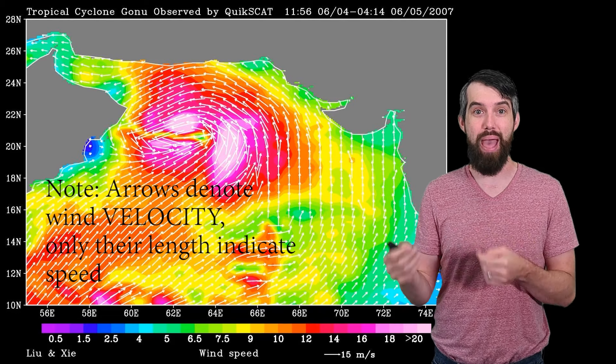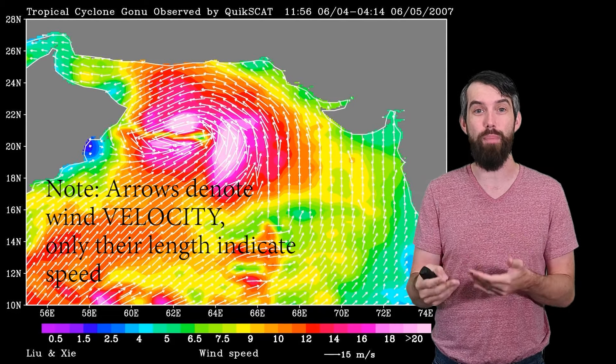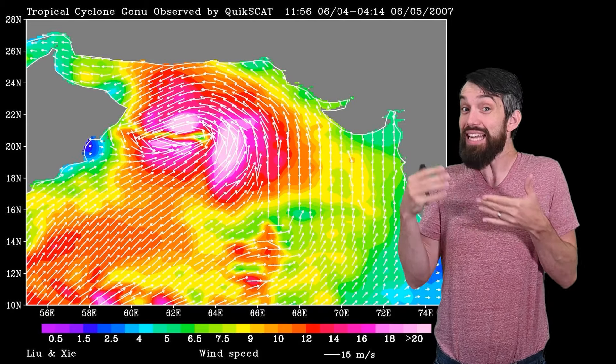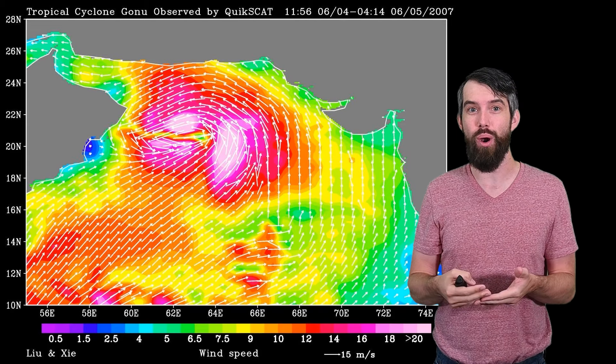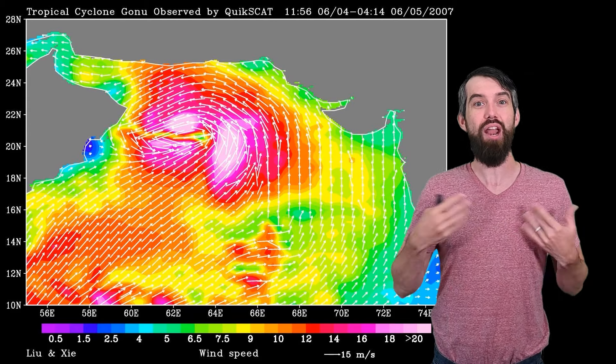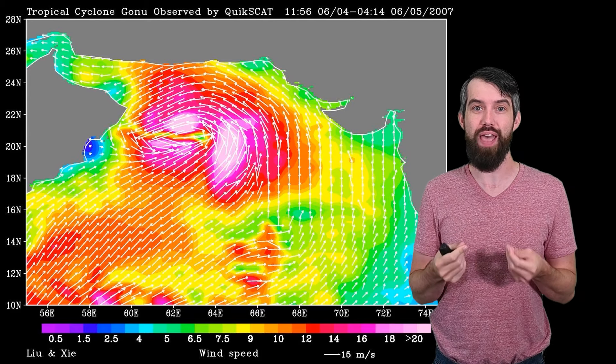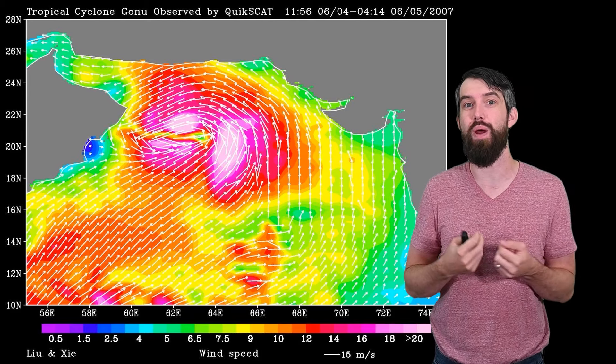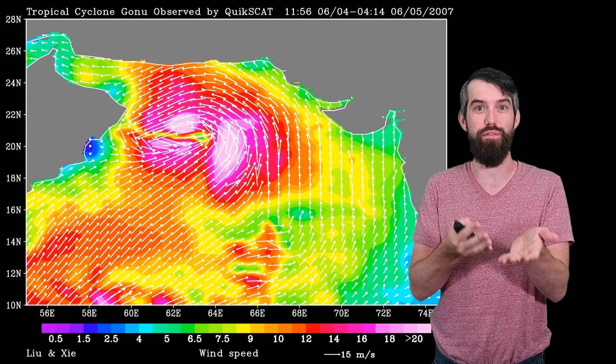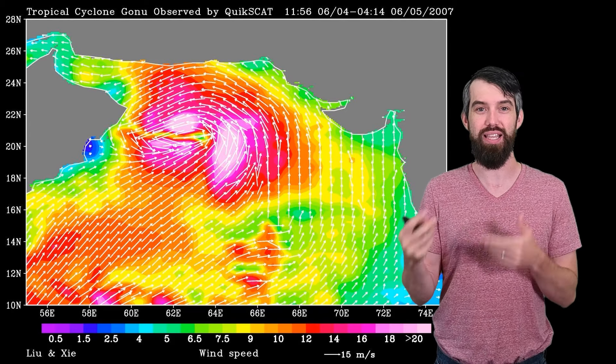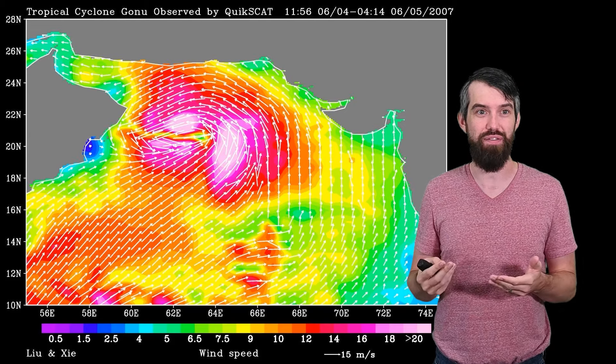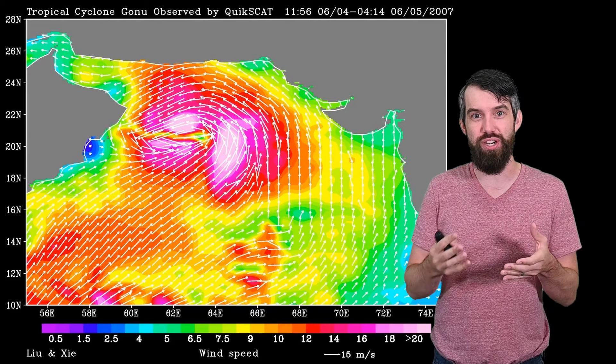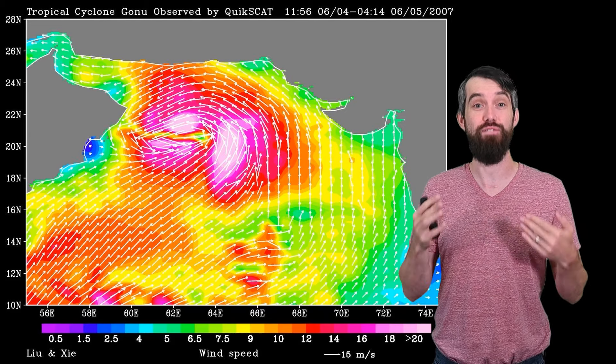This happens to be a map at a particular point of time for a tropical cyclone. But it has that same feature of dropping the ball where at every spot there is an arrow and the arrow is indicating what is going on at that spot, whether it is a wind speed or whether it is the direction in which the ball would fall due to gravity. Something like this where you want to give a magnitude and a direction at every point in space are called vector fields.